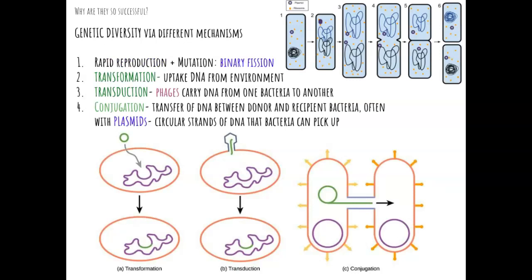Prokaryotes are also very successful because they have several different ways to reproduce, and some of those can happen very quickly. The first type is called binary fission, where the cell's circular DNA is copied and the cell doubles itself, making a new daughter cell from the parent cell very quickly. While that DNA is getting copied, the mutation rate is incredibly high. That is why we see such a high mutation rate in bacteria — they're not using the same checks as eukaryotes to ensure their DNA is being copied correctly.